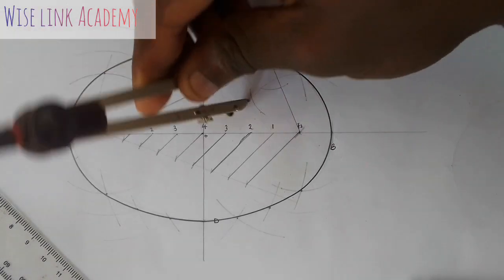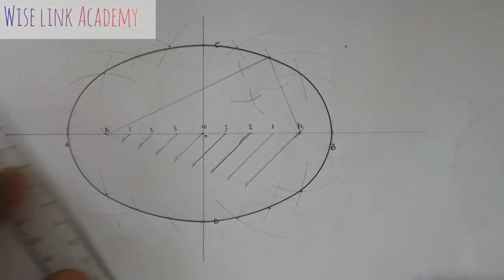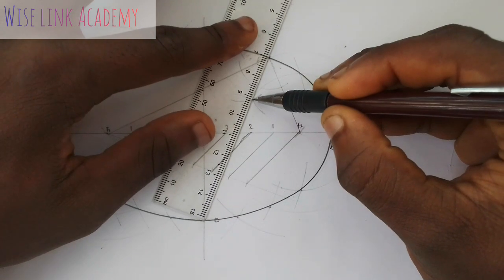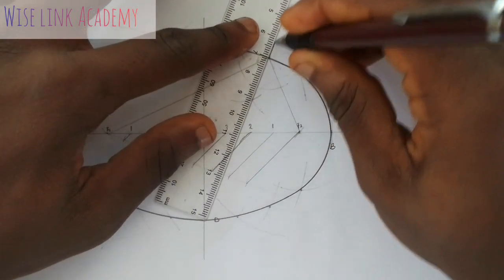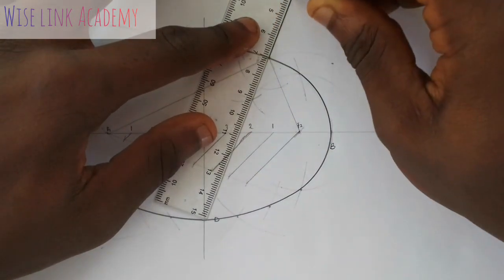Similarly, come to this point here. Then cut the arc. The arc is cutting at this point. So, this point and this point here, I will take in this part here. This is my tangent.